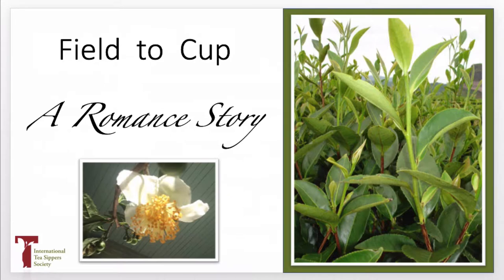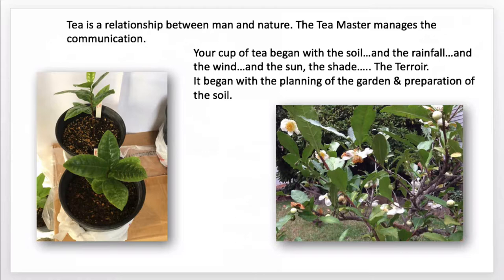Your field-to-cup story will take on that passionate romance, like the beautiful tea flowers — the flush of new growth that is the only thing we pluck for our tea. Tea is a relationship between man and nature — to me, that's a very romantic idea. The tea master is the one that manages that communication. Your cup of tea actually begins with the soil, the rainfall, the wind, the sun, and the shade — we call that the terroir. But before that, it began with planning the garden and the preparation of the soil. All of that goes back to the tea master and is so much greater a picture than most people have of tea. You'll be giving them something very valuable, something that can touch people's heart and soul.